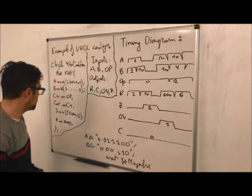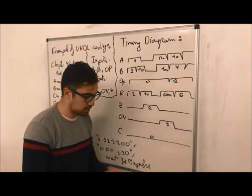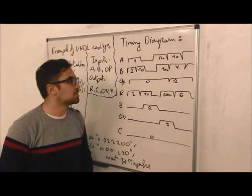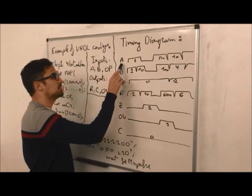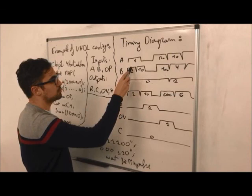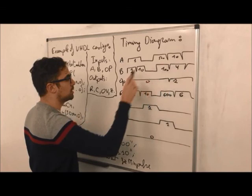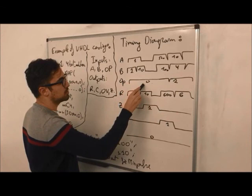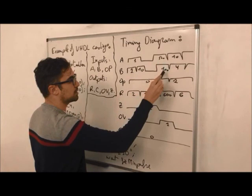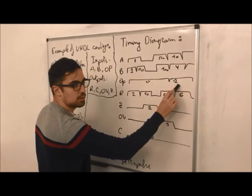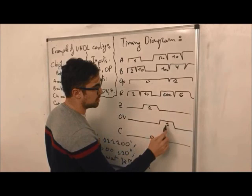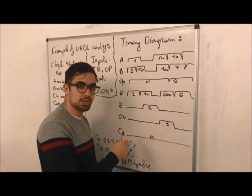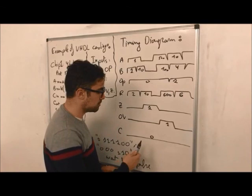Now, let's move to the timing diagram. A and B are the inputs — A is the first number and B is the second. In this case we have: 1 and 1, 0 and 10, 500 and 100, and 10 and 4. The operation: 0 is a plus and 1 is a minus. The R is the result — so 1 plus 1 equals 2, 0 plus 10 equals 10, 500 plus 100 equals 600, and 10 minus 4 because we have a 1. The overflow is triggered here because we have 600 in the result, meaning we need a 1 to carry, but in this case we aren't going to need it.